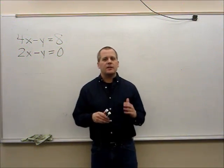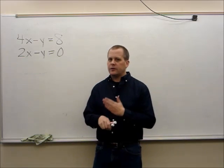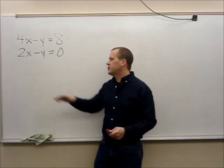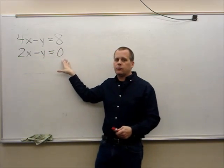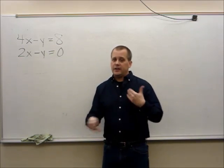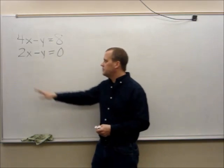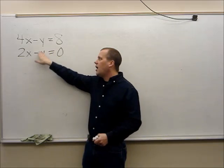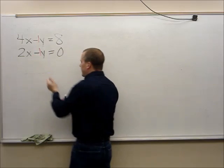Hi, welcome back everybody. In the last video clip we were talking about the elimination process and how to find the point of intersection. In this video clip we've got these two equations. The first equation is 4x minus y is equal to 8. The second equation is 2x minus y equals 0. Let's go through those same questions. Are the numbers in front of x exactly the same? No. Are the numbers in front of y exactly the same? Keep in mind there's that little invisible number of 1 — and the answer is yes.